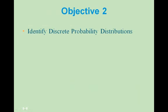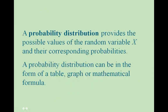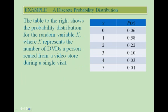Objective 2: we want to identify discrete probability distributions. A probability distribution provides the possible values of the random variable x and their corresponding probabilities. A probability distribution can be in the form of a table, a graph, or a mathematical formula. The table shown here is a probability distribution for x, where x represents the number of DVDs a person rented from a video store during a single visit. The probability that a person rents two movies on a single visit is 0.22.